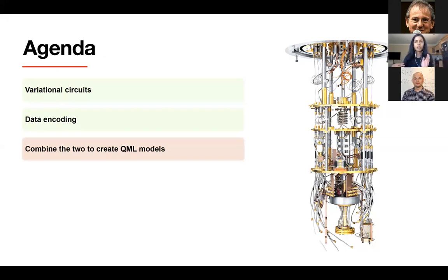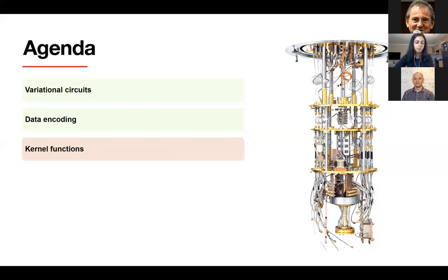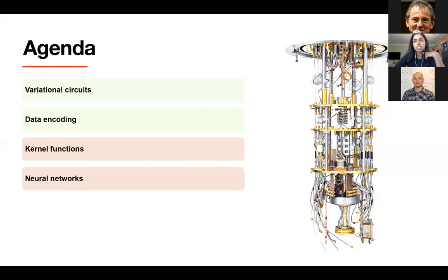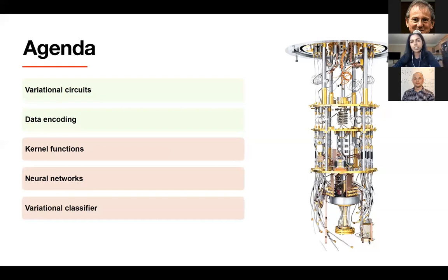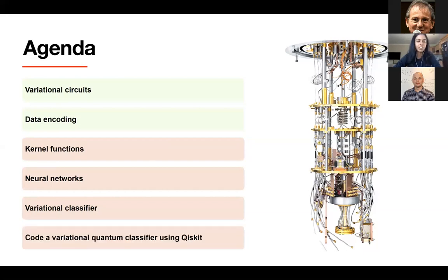Let me remind you what we previously covered. In the first lecture we talked about variational circuits and how they work — circuits that depend on parameters which you optimize. Last lecture we spoke about data encoding strategies — how to encode classical information into quantum circuits or quantum states. Today we combine these two things to create quantum machine learning models. I want to cover kernel functions, neural networks, and the variational classifier, and then code a variational quantum classifier using Qiskit.